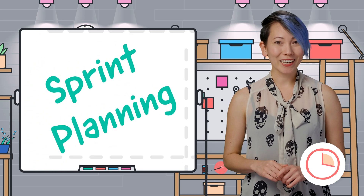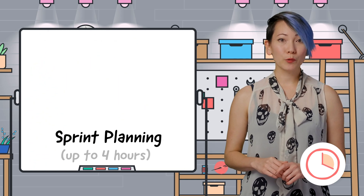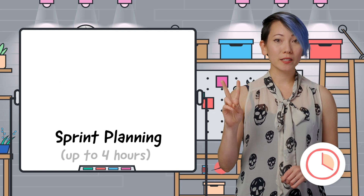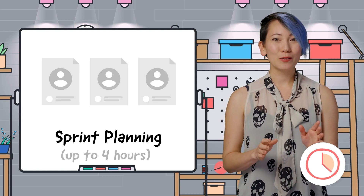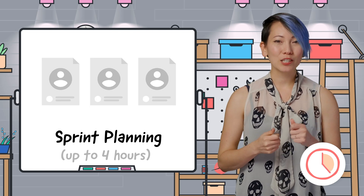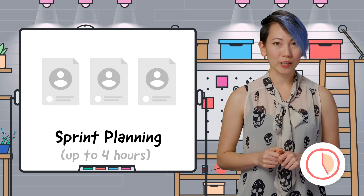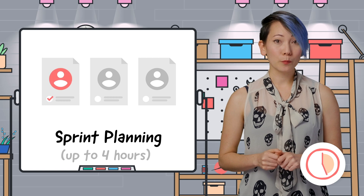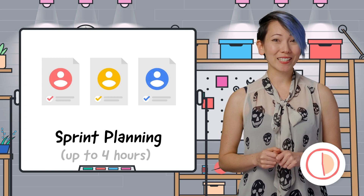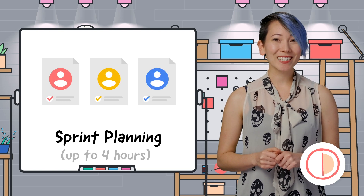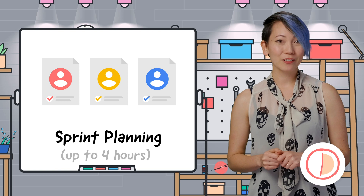Step 2: Sprint planning. In standard Scrum, a sprint lasts for two weeks. During sprint planning, you and your team grab the tasks you believe are achievable within the next sprint. If you did your backlog grooming well, it should be easy to grab tasks off the top of the prioritized list.